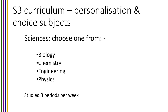You must choose a science. In the science faculty we offer biology, chemistry, engineering and physics, and again whichever one you pick you will study for three periods per week. Please remember that at the end of the course choice there's the opportunity to choose two other subjects — so if you're desperate to study biology, chemistry and physics, choose one of them here and there will be an opportunity further into the form to pick chemistry and physics in addition.